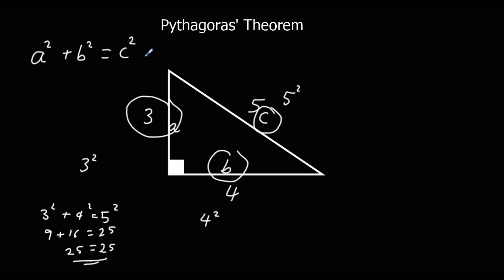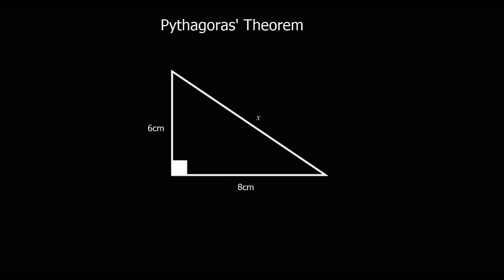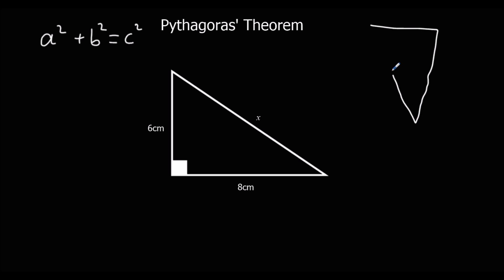That relationship works for any right-angled triangle, and we can use it to find a missing length. So A squared plus B squared equals C squared, where C is always the long side. We can always tell which one is the long side because it's opposite the right angle — no matter how the triangle is oriented. So here we're going to work out the long side.